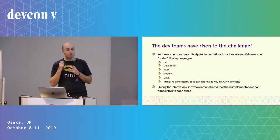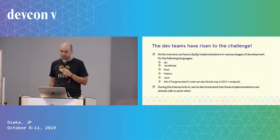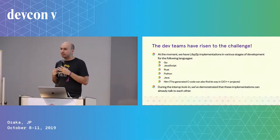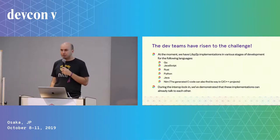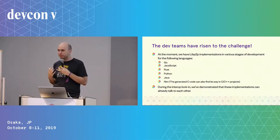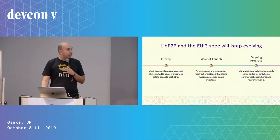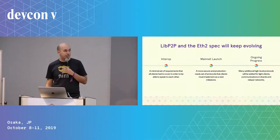Our own implementation written in Nim should be perfectly usable in C++ projects in the future. More importantly, all these implementations are now at the stage where they can talk to each other. During the interop walkthrough, we demonstrated networks where all these clients were able to reach consensus over p2p.